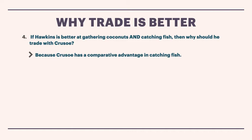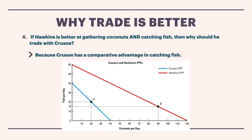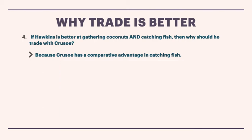Crusoe has a comparative advantage in catching fish. If we look at the graph again, we can see Hawkins is definitely better — he's better at catching fish — but he's way better at gathering coconuts. So when you compare the two in terms of their ability to catch fish or gather coconuts, it's clear that Hawkins is way better at gathering coconuts than Crusoe is, and he's just kind of better at catching fish than Crusoe is. Economists call that a comparative advantage, and that's going to show us why when these two guys trade with each other, they can both come out ahead.